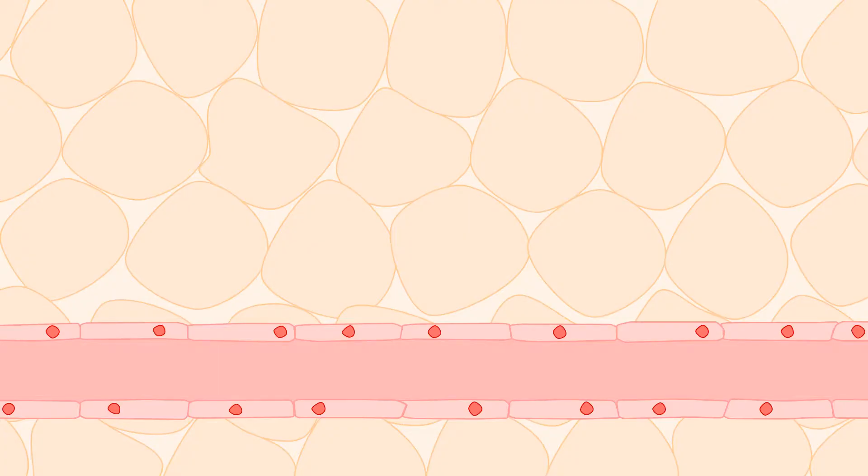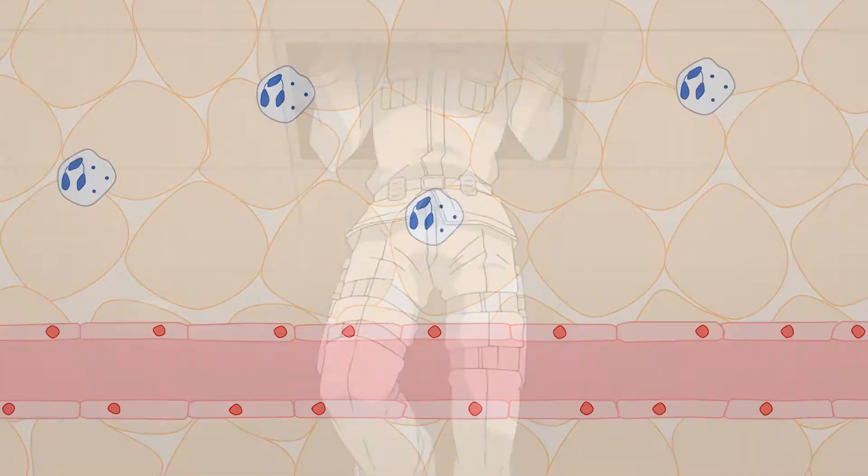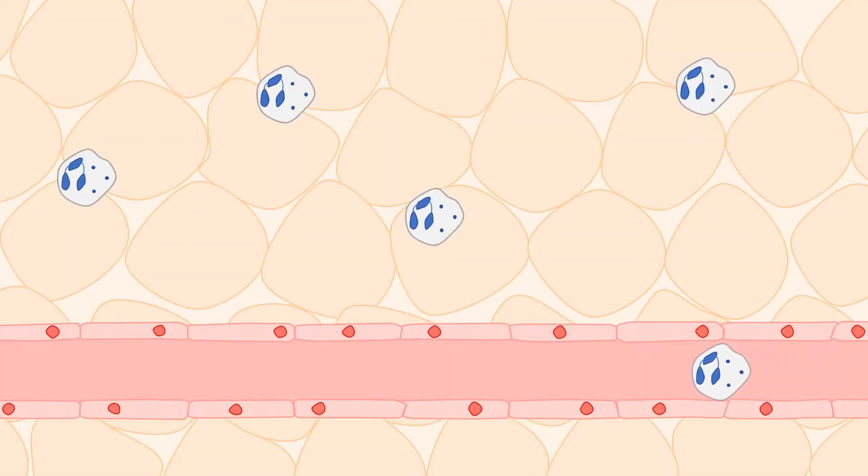Unlike red blood cells which are confined to the blood vessels, white blood cells are located in both circulation and tissue and can move freely between both locations in a process called transmigration. They do so by changing their shapes to squeeze through the walls of your blood vessels.